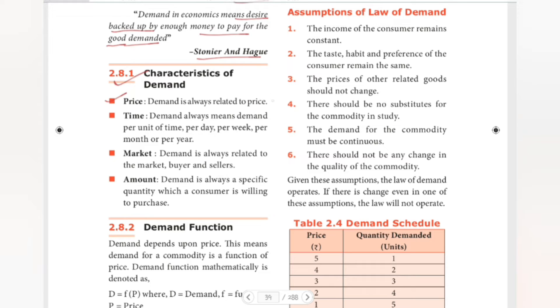Demand is always related to price. Next, demand always means demand per unit of time - per day, per week, per month or a year. Market - demand is always related to market, buyer and sellers. Amount - demand is always specific quantity which consumers are willing to purchase. So price, time, market, amount.